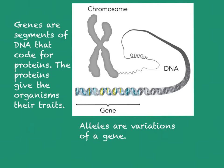Genes often have different variations, and these different variations are called alleles. Just like in the example with seed color, seeds could be yellow — that would be the yellow allele — or they could be green, so they would carry a green allele.